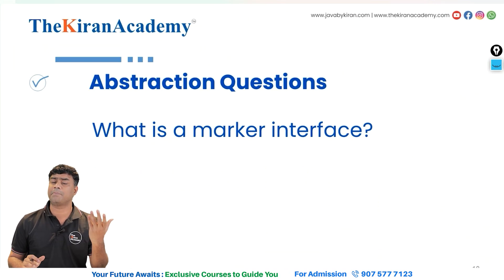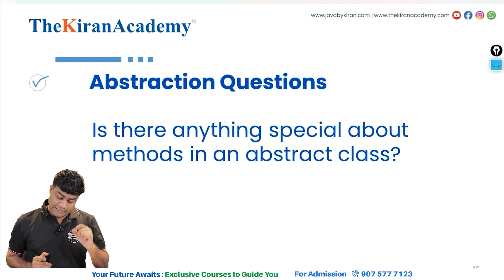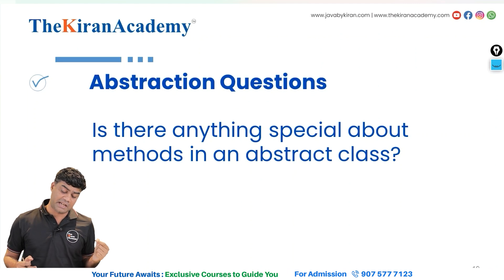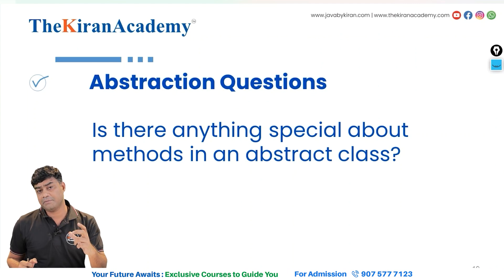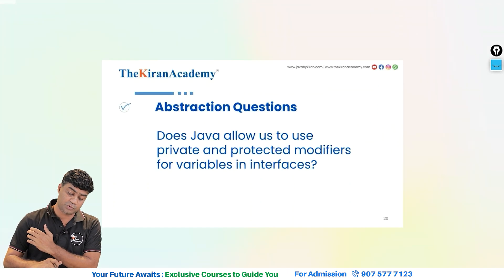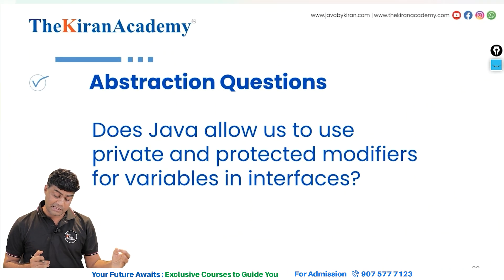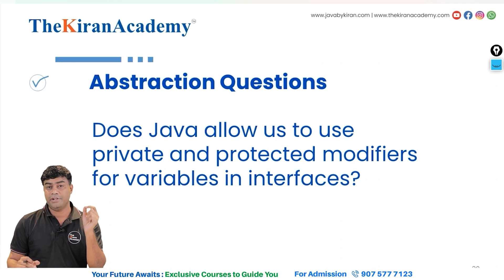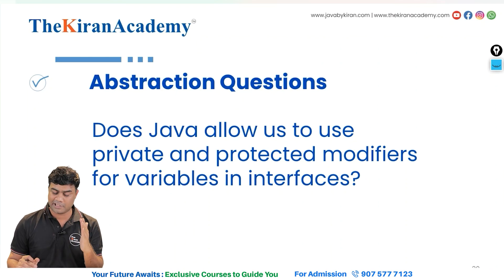Is there anything special about methods in an abstract class? Yes — methods may or may not have a body, so both types are allowed. Java also allows private and protected modifiers for methods and variables in an abstract class. In contrast, an interface will only have public methods.